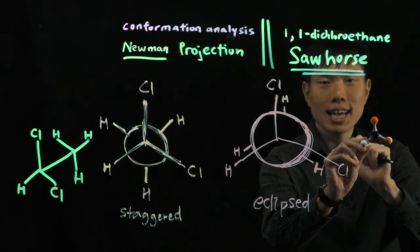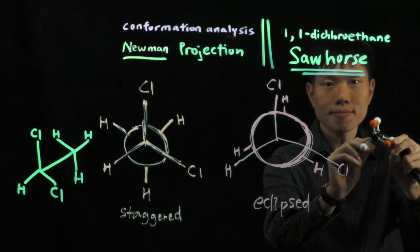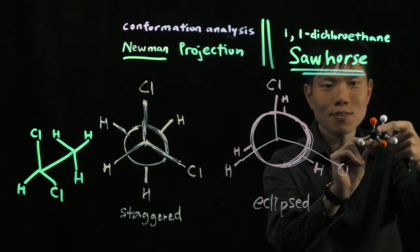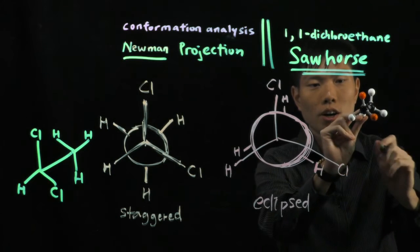So eclipsed. And for Sawhorse, again, you rotate this through an angle. Do you see now that you can see this front carbon and back carbon? So to draw it on the diagram.